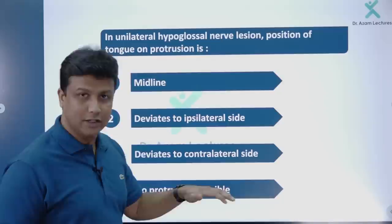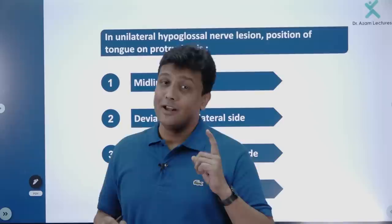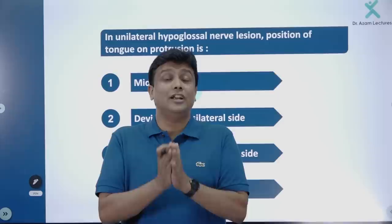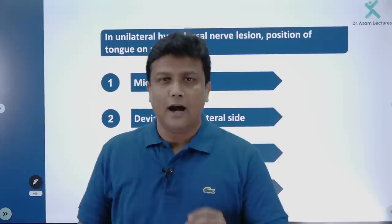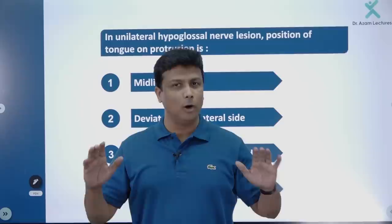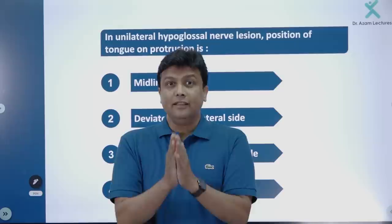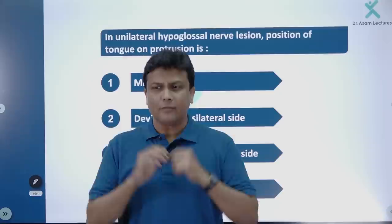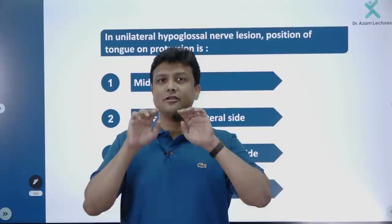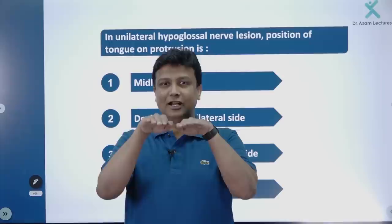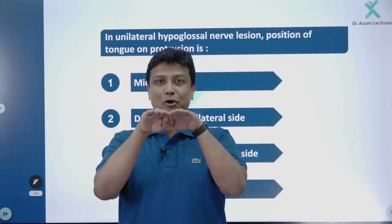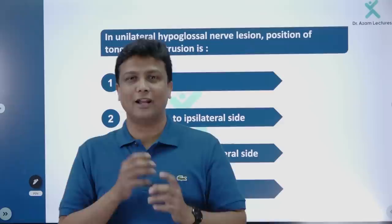Next question: in unilateral hypoglossal nerve lesion, what is the position of the tongue on protrusion? The tongue topic is a hot favorite in FMG exams. The hypoglossal nerve (12th cranial nerve) supplies all the muscles of the tongue. The muscle responsible for protrusion is the genioglossus, and it is a paired muscle — two genioglossus muscles. Normally both act together and the tongue protrudes straight out.